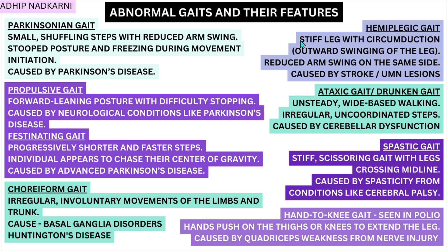Next is hemiplegic gait, one of the most commonly seen gaits in stroke or upper motor neuron lesions. You will see a stiff leg with circumduction — outward swinging of the leg — and reduced arm swing on the same side. Because there is impairment on one side the hand may be in a synergy position and the leg performs circumduction, possibly due to lack of hip flexion or inability to clear the ground because dorsiflexion is lacking.